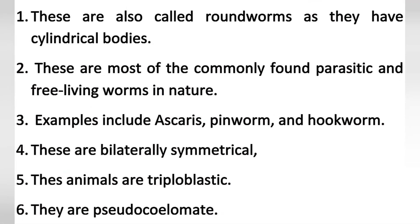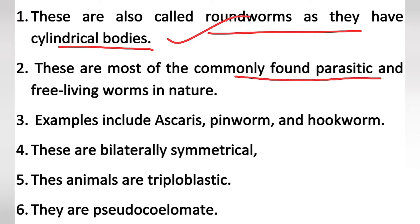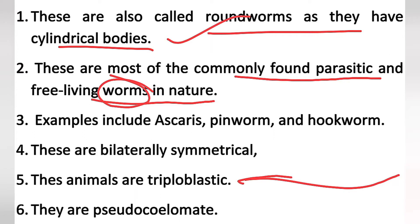These are called roundworms as they have a cylindrical body. Second point: these are the most commonly found parasitic and free-living worms in nature — worms which are long and thin like earthworms.